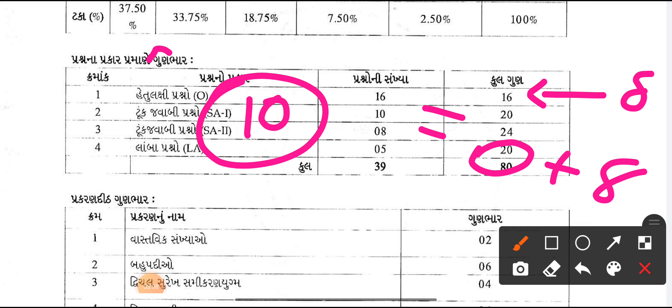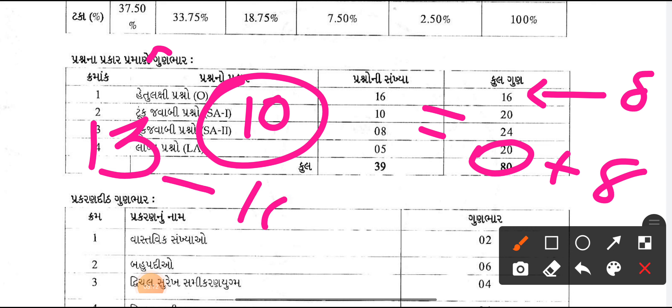If you ask 10 of 10 questions, you don't have 10 questions in this system and you don't have many answers. If you have 10, an average of 10, you can use 10 as well.